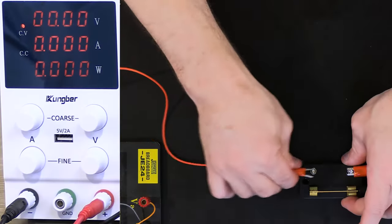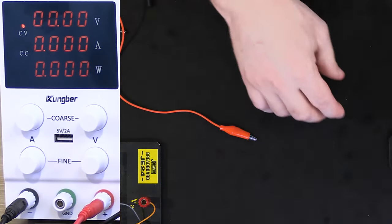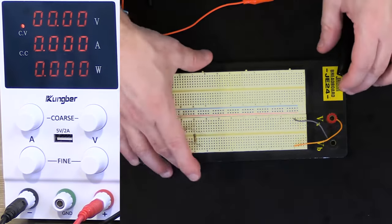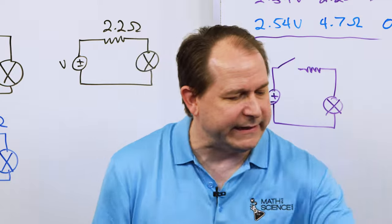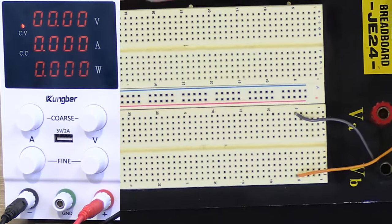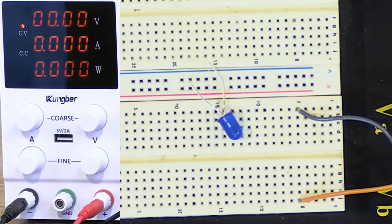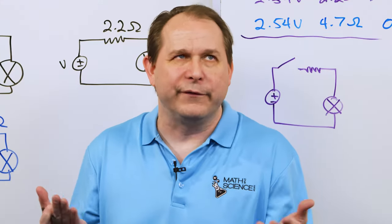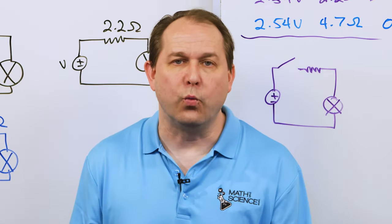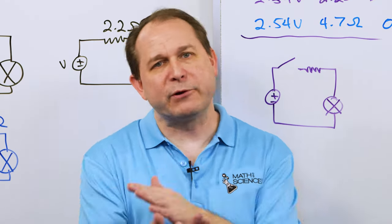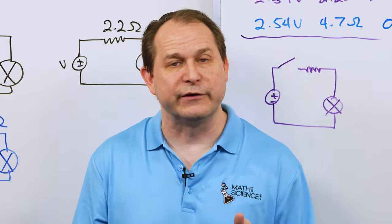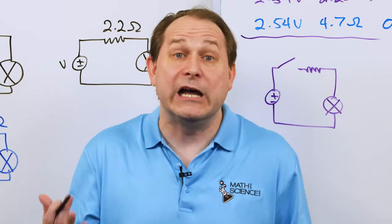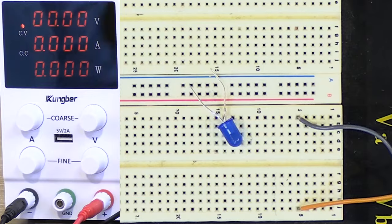The next thing I'd like to do is show you something neat called a light emitting diode. We're going to talk about diodes a lot more in the future, but basically a diode is a one-way valve for current — it only lets the current flow one direction. If you flip it around the wrong way, the current can't flow. This is called a light emitting diode — it'll light up when the current is flowing through it.